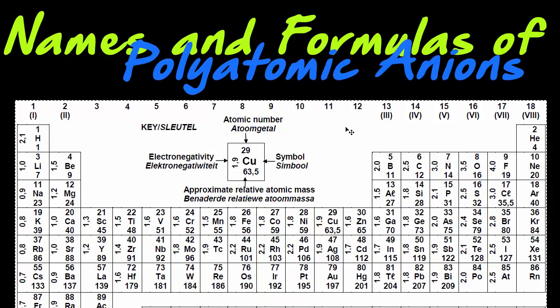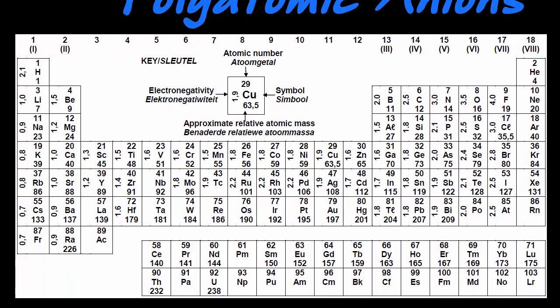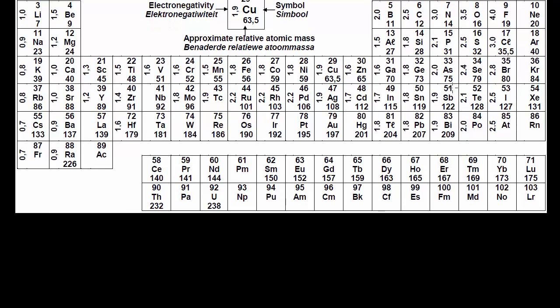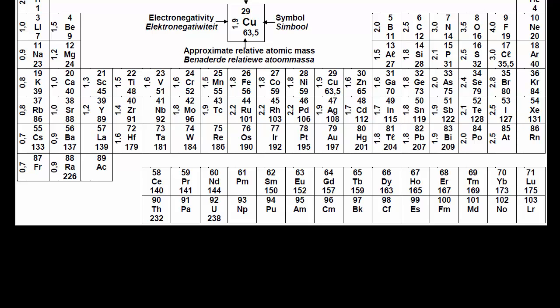Hi there. If you are watching this video because you've watched the previous video, then I'm actually very happy that I didn't scare you too much when it comes to naming the names and formulas of polyatomic ions — anions in this case, anions being negatively charged particles. In the previous video I just called them ions, but they are all negatively charged, and there's only a few that are positively charged with the polyatomic ions. So in the previous video, let me quickly recap and show you how we can get the names of the polyatomic ions for the other ones.